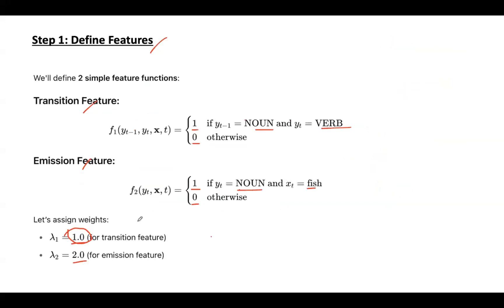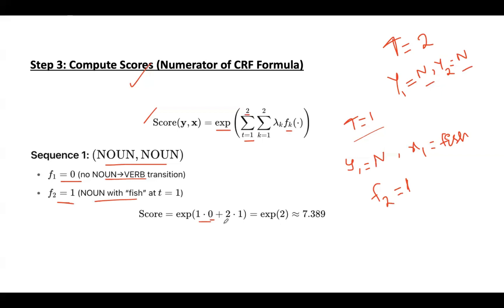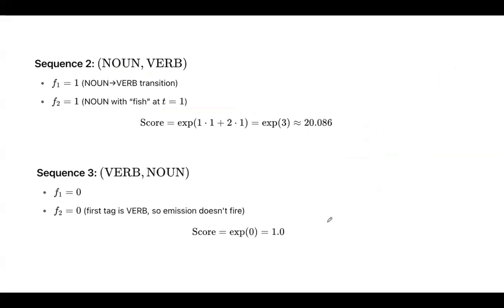The weight assigned to f2 is 2.0. That is 2 and the value which we got now is 1, so 2 into 1. This value is approximately 7.389. In the same way, we need to calculate for remaining sequences also.